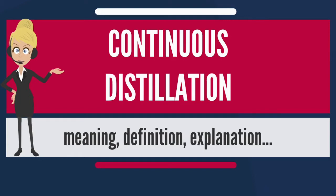The process produces at least two output fractions. These fractions include at least one volatile distillate fraction, which has boiled and been separately captured as a vapor condensed to a liquid, and practically always a bottoms or residuum fraction, which is the least volatile residue.